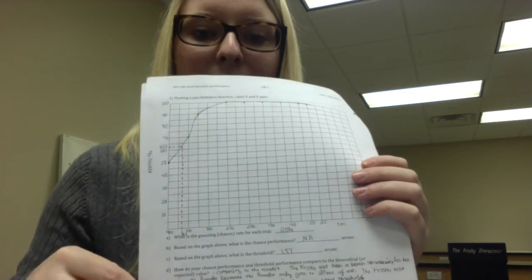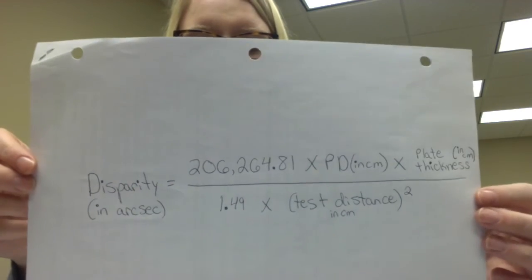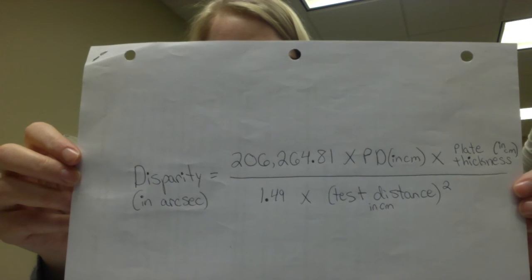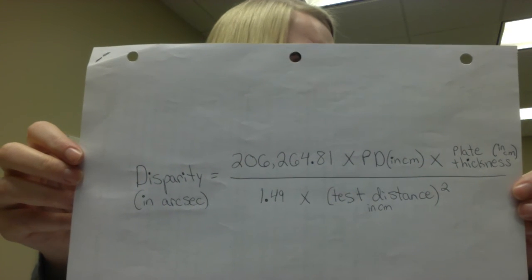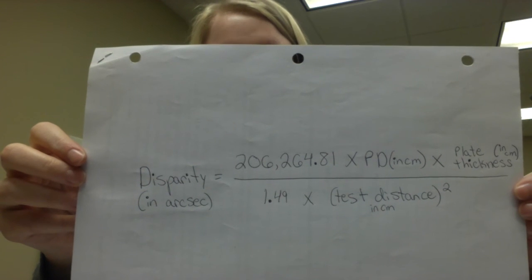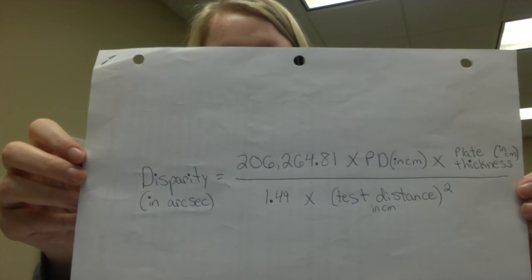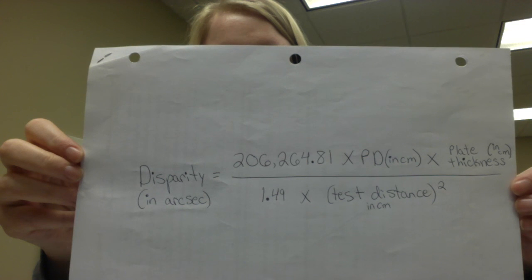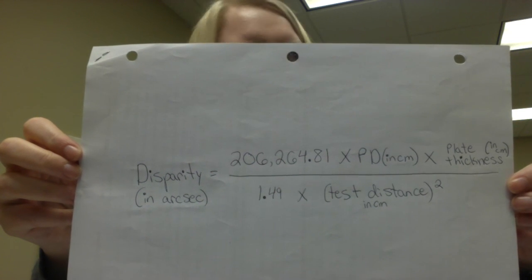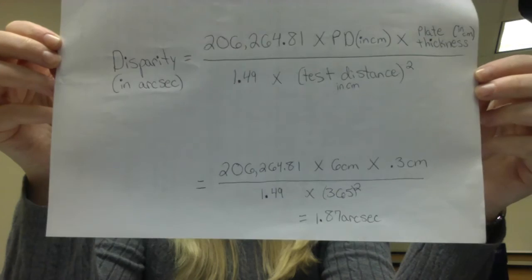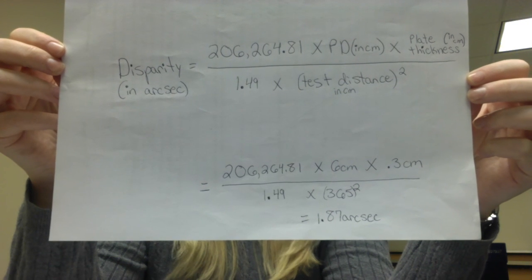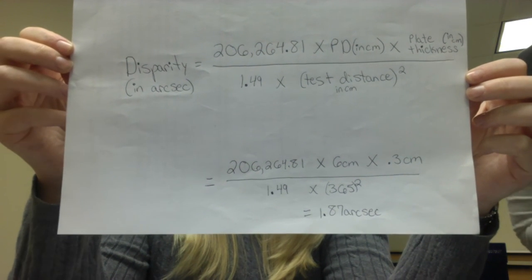Using that distance, we used the disparity equation to determine how many seconds of arc that was. Disparity equals a constant times the PD in centimeters times the plate thickness in centimeters, divided by a constant multiplied by the test distance in centimeters squared. With a PD of 60, plate thickness of 3 millimeters, and a threshold test distance of 365, we get a threshold of 1.87 arc seconds.